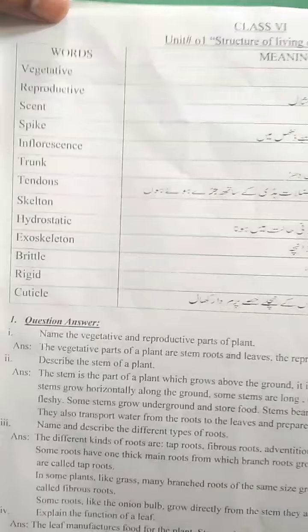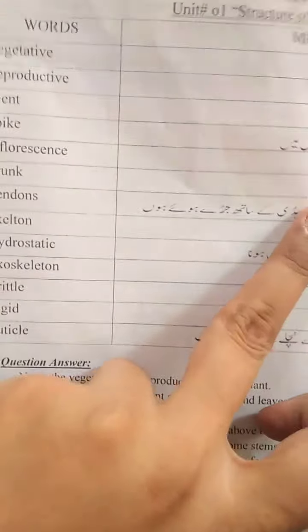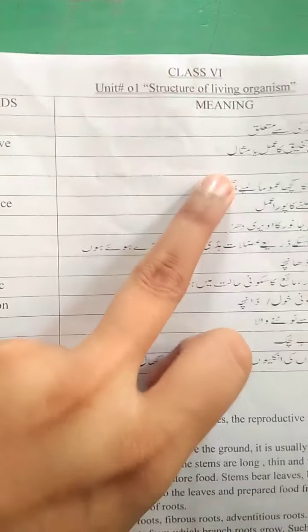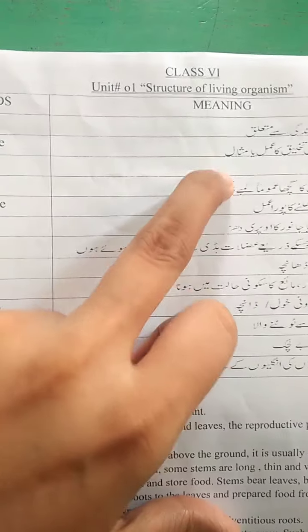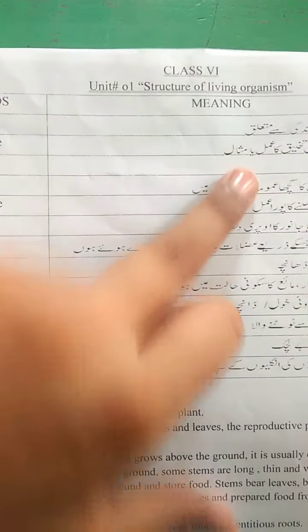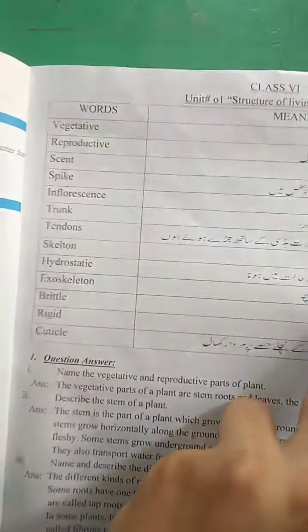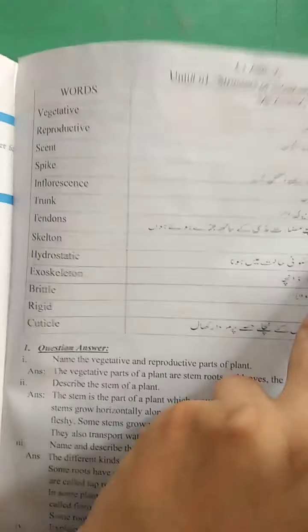Bismillahirrahmanirrahim. Class 6 science. The explanation of chapter number 1 — Structure of Living Organisms — has been given to you. Now this is the homework of Class 6 science.